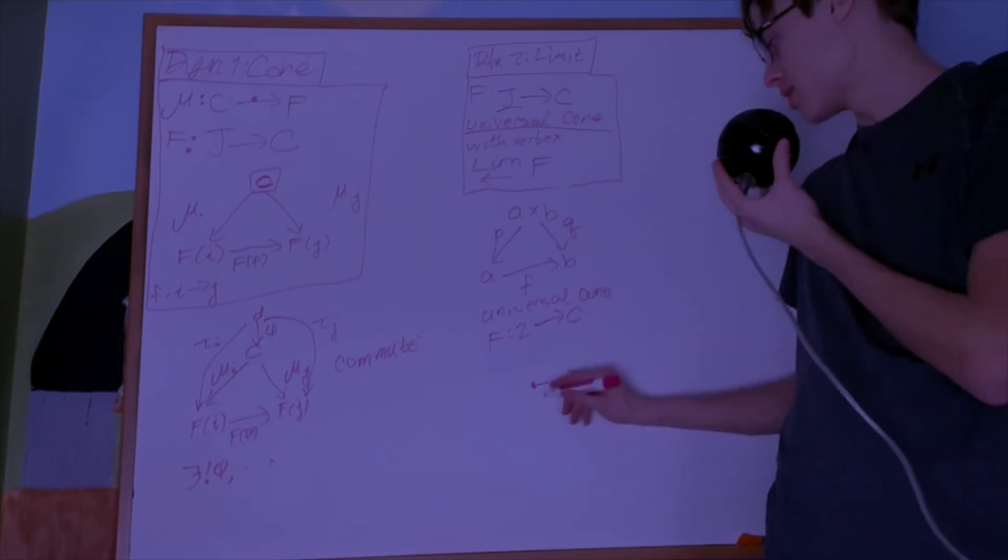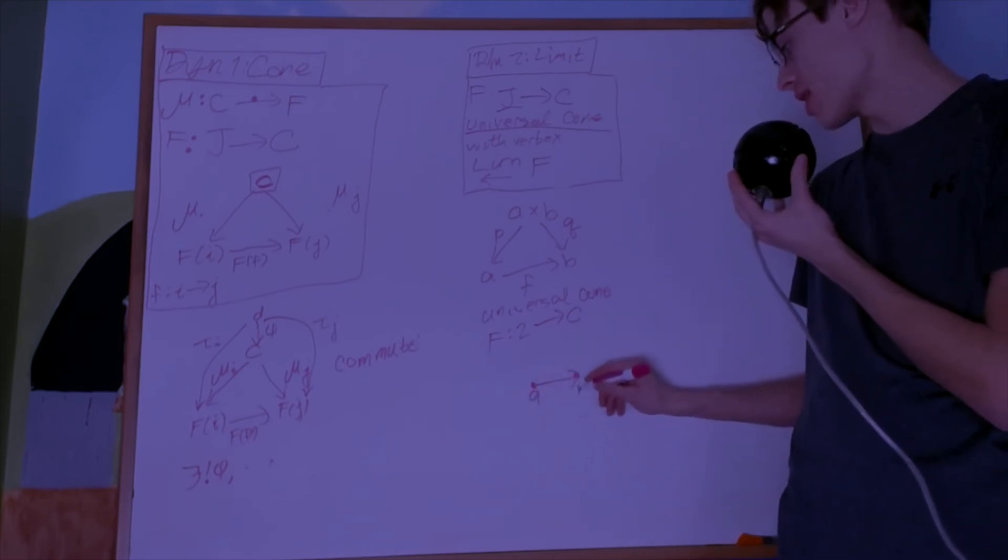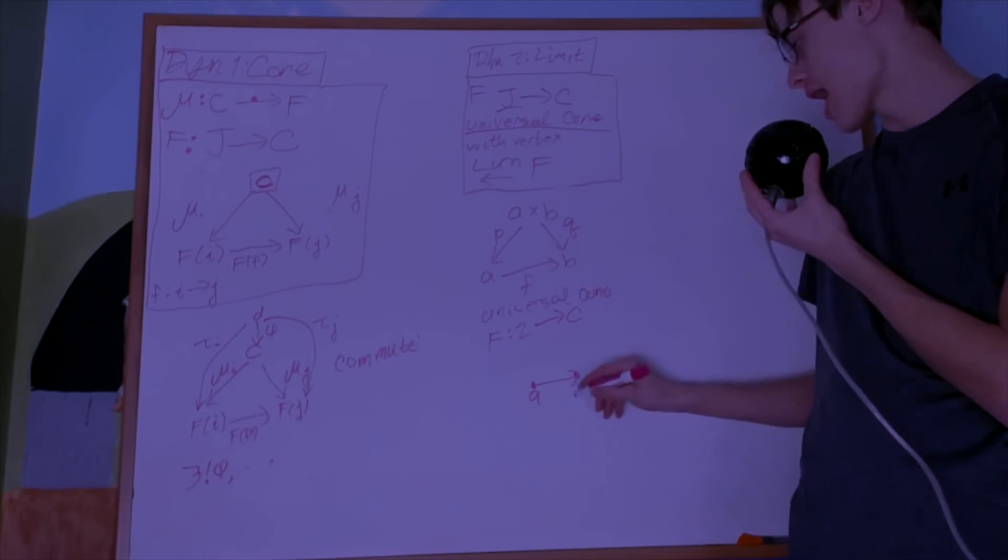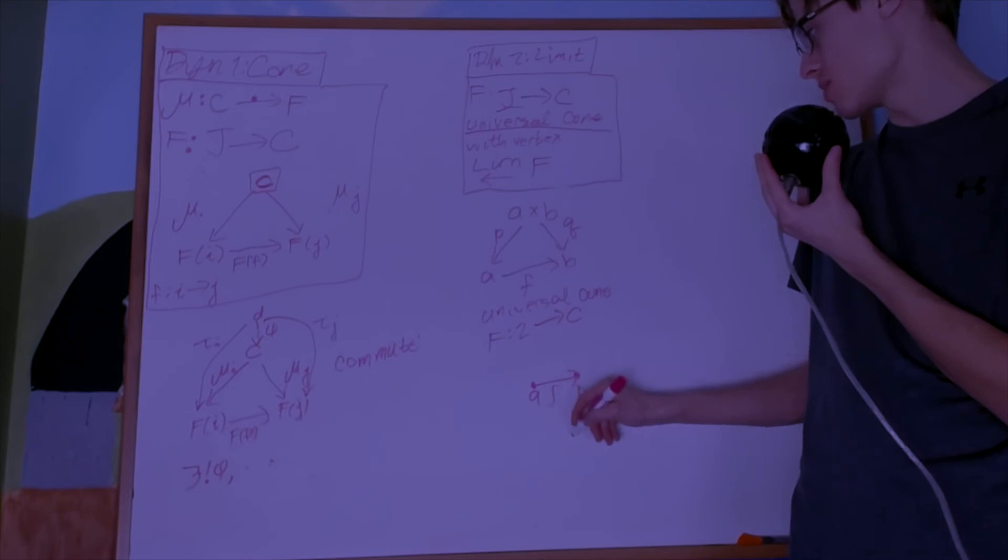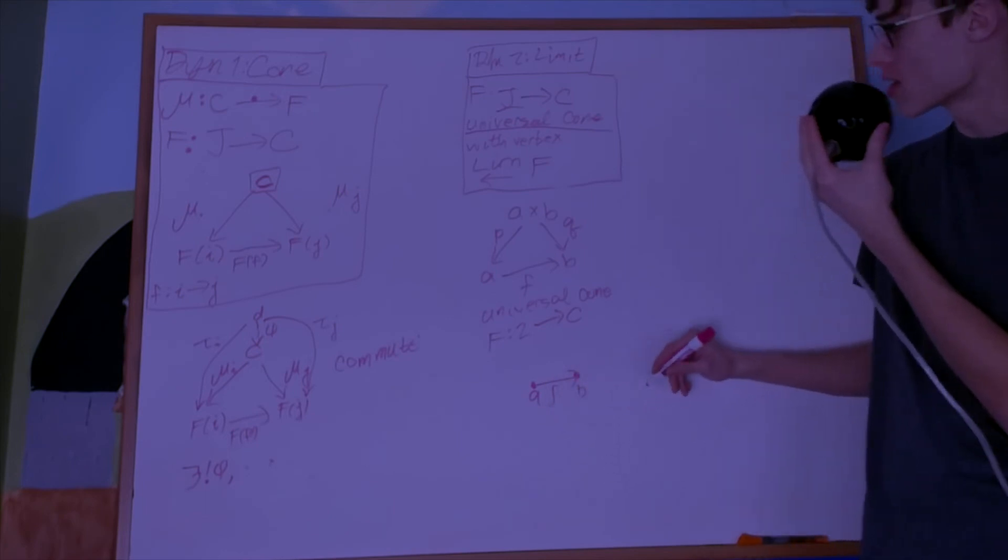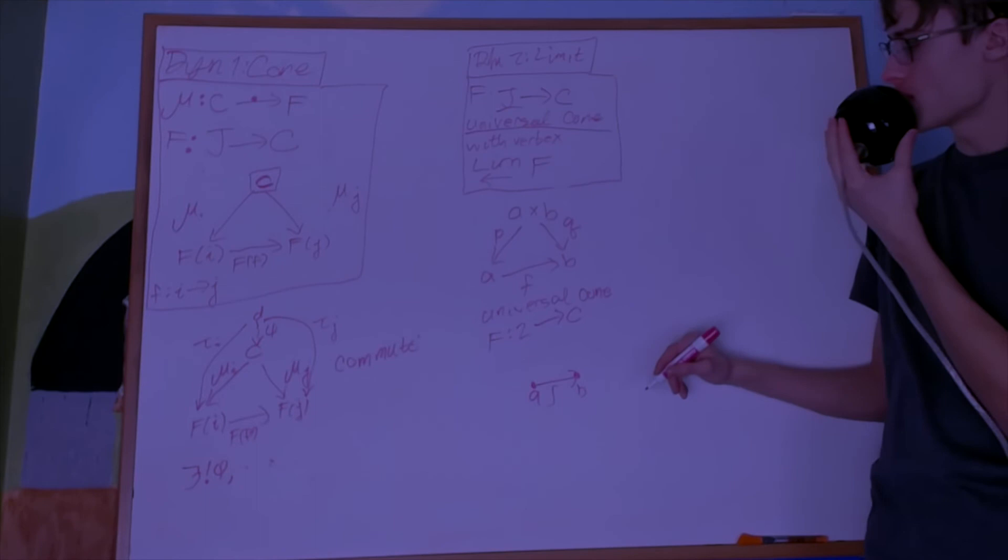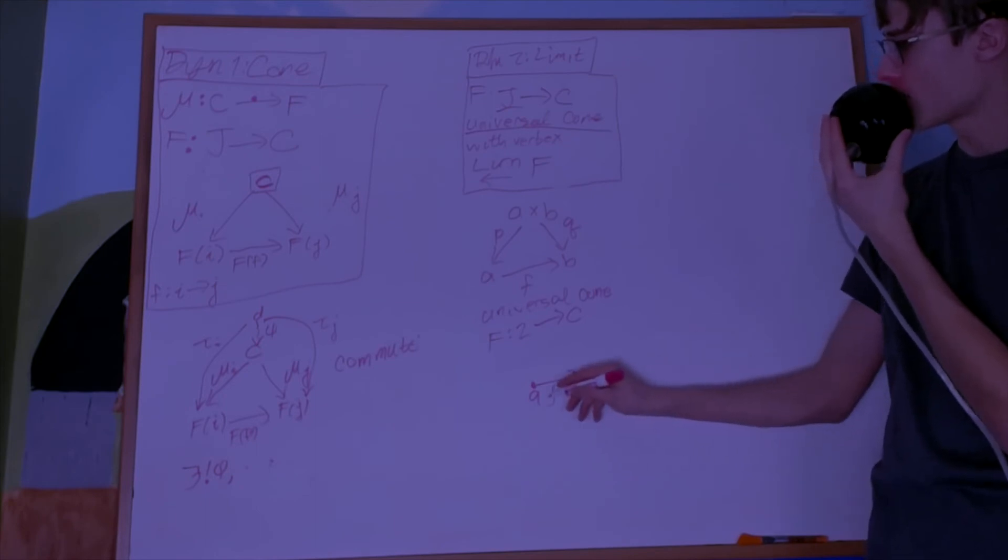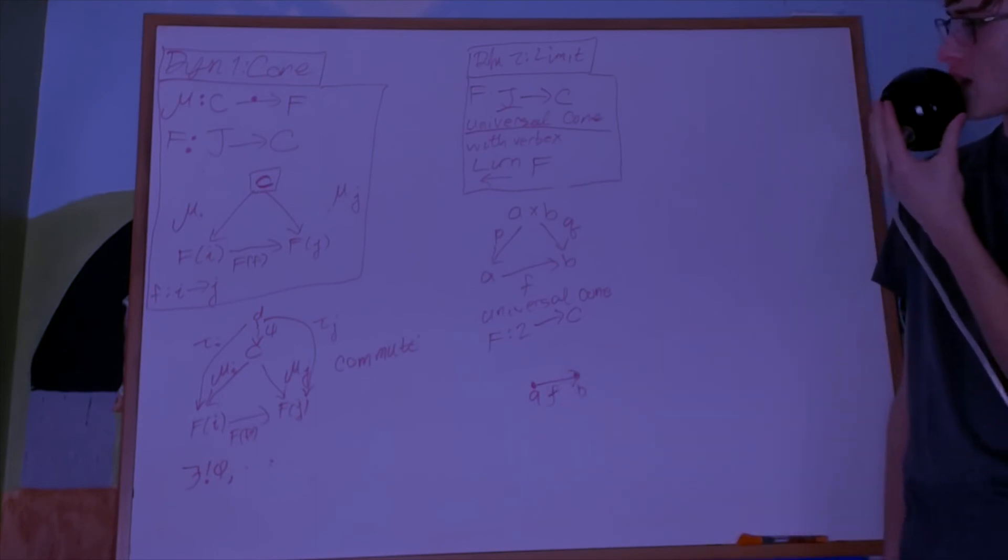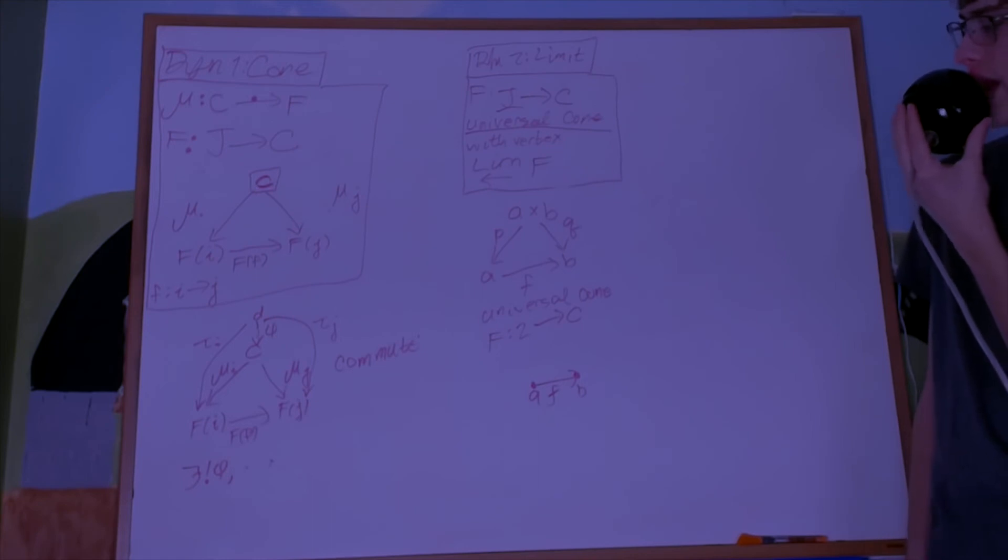And it'll send this first object to A and the second object to B, and the arrow between them will just be the f. And then it's going to be a limit of that diagram.